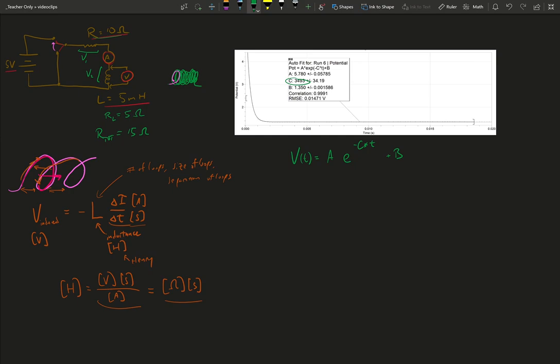Another way to consider this is V is a function of time is equal to some V_0, some initial spike, times e to the minus t over tau. Why would I write it that way? Well I know that t will have to be in seconds, which means tau also has to be in seconds. This right here is what we call the time constant.